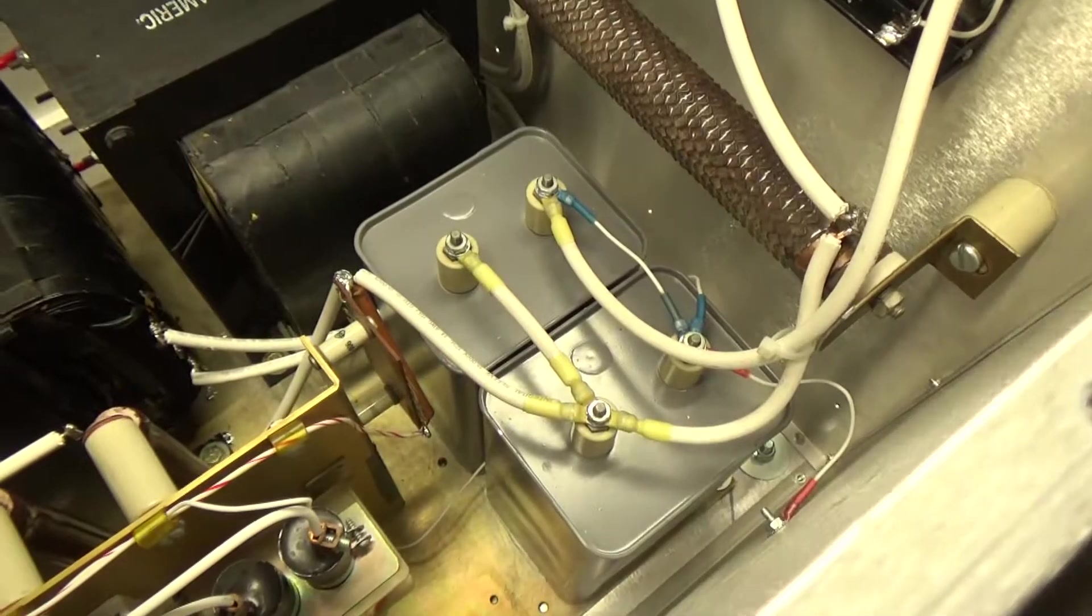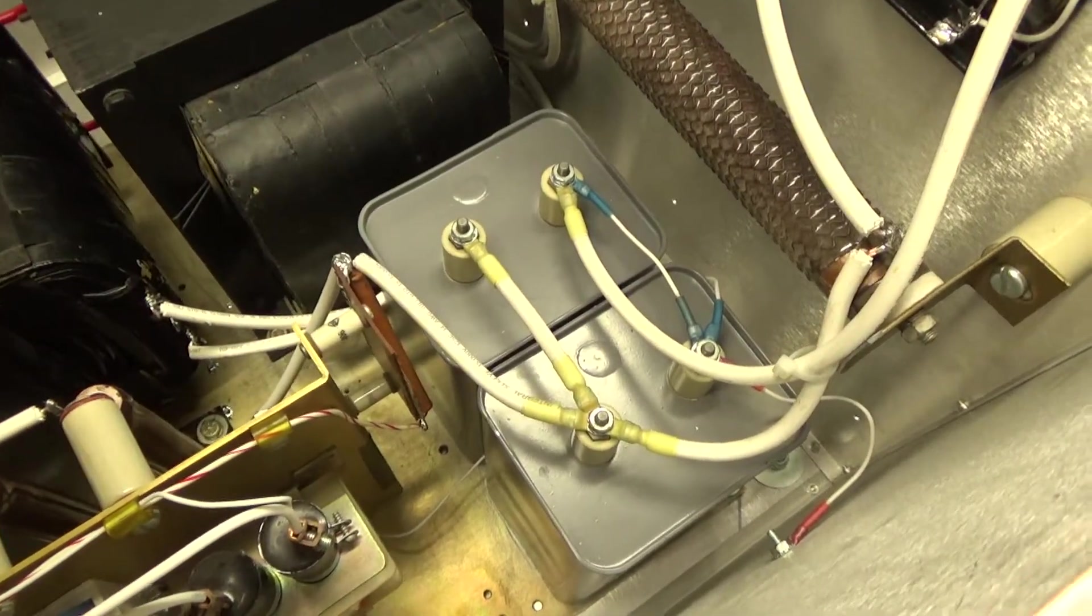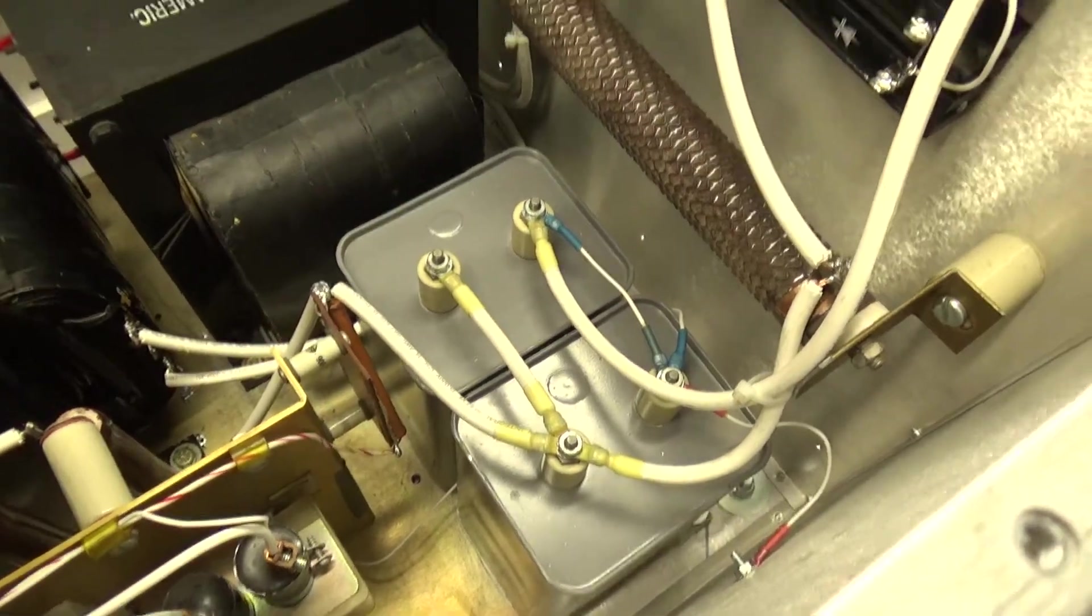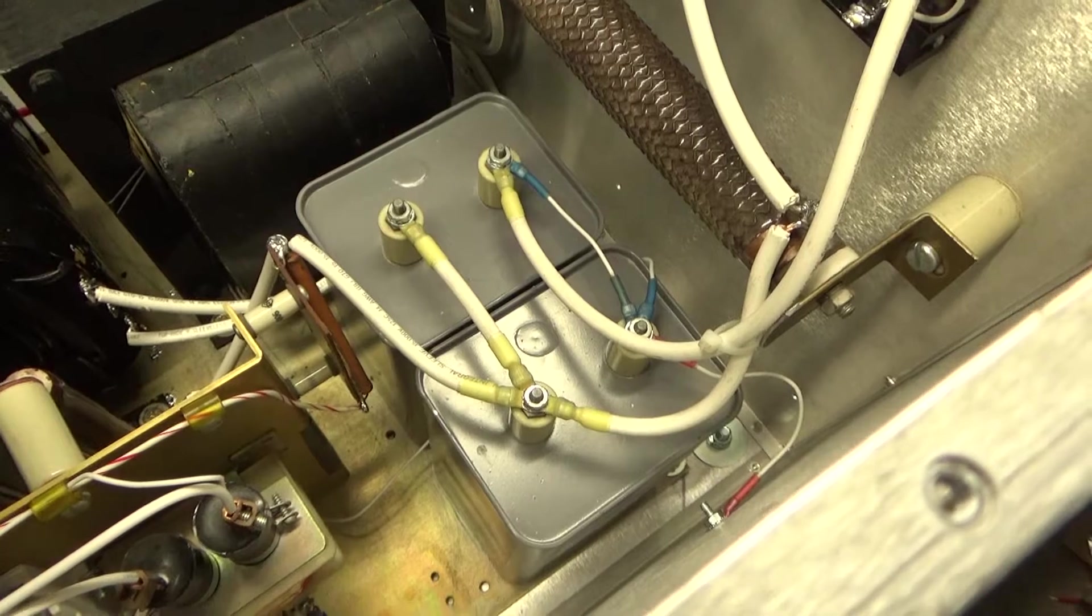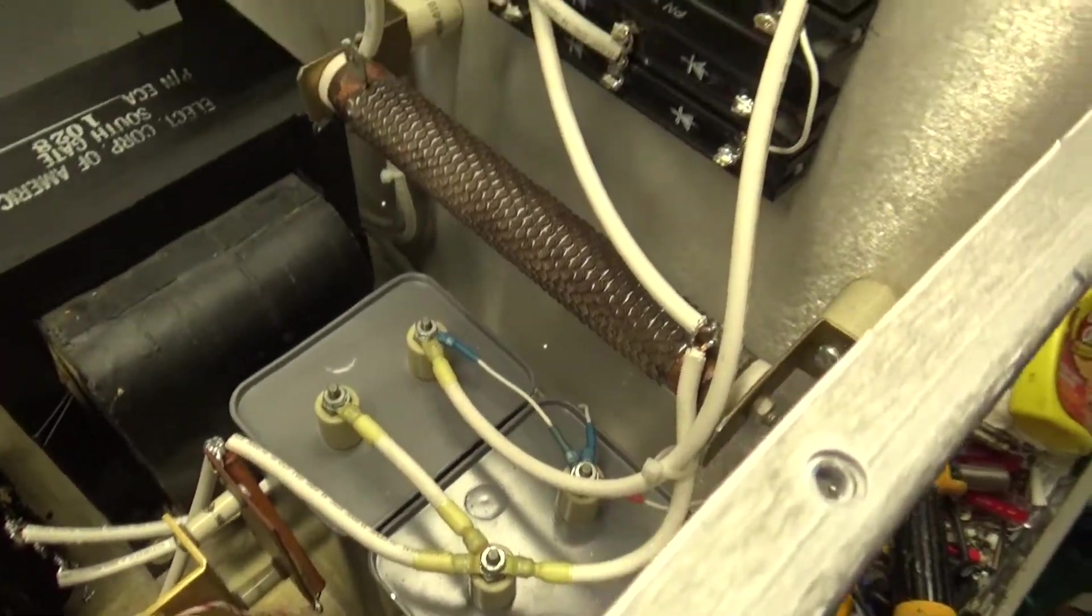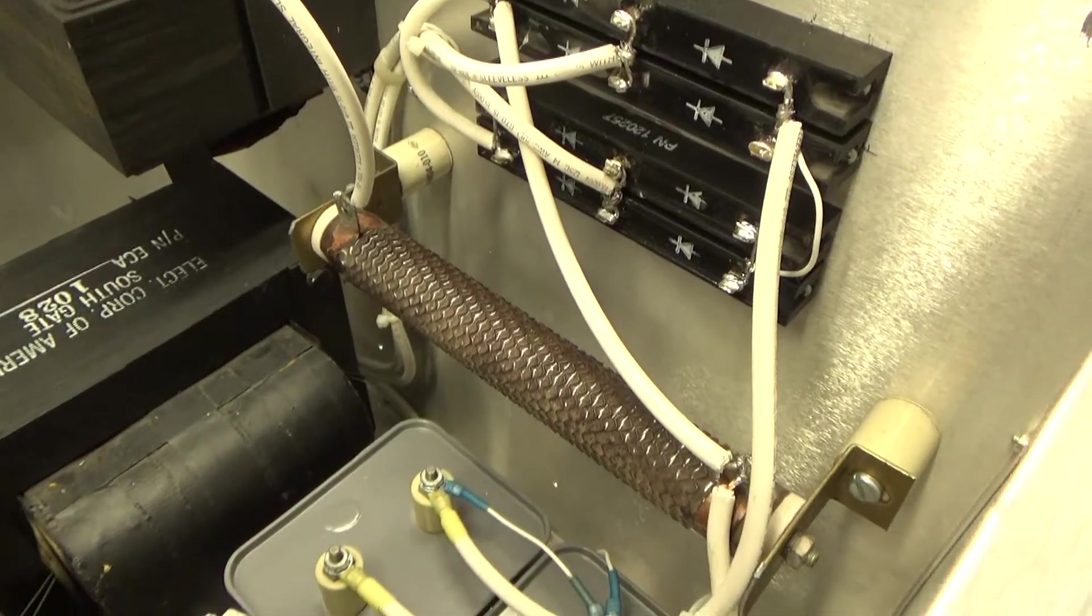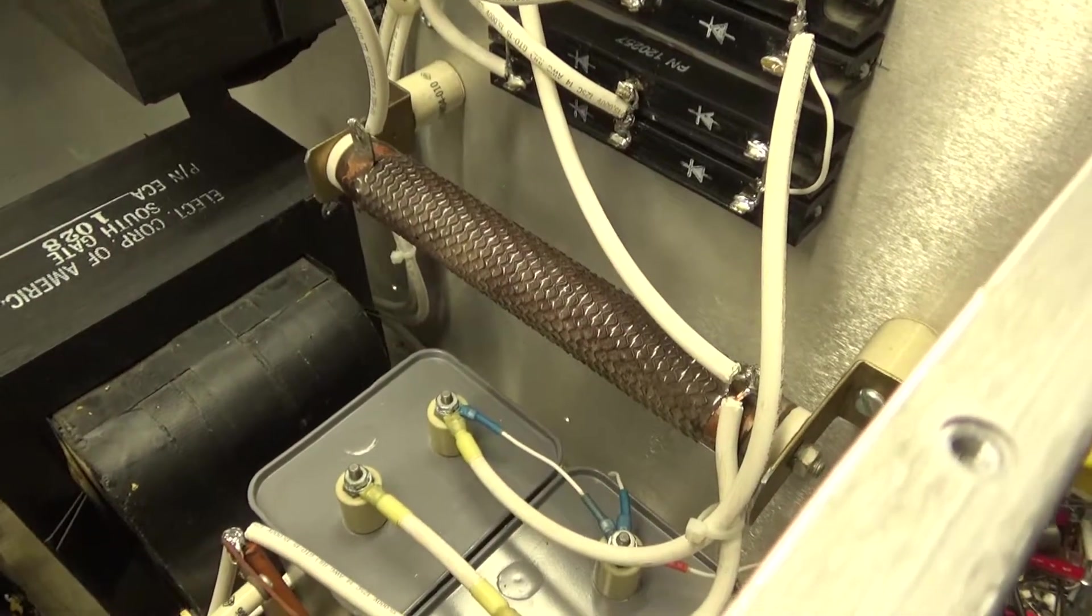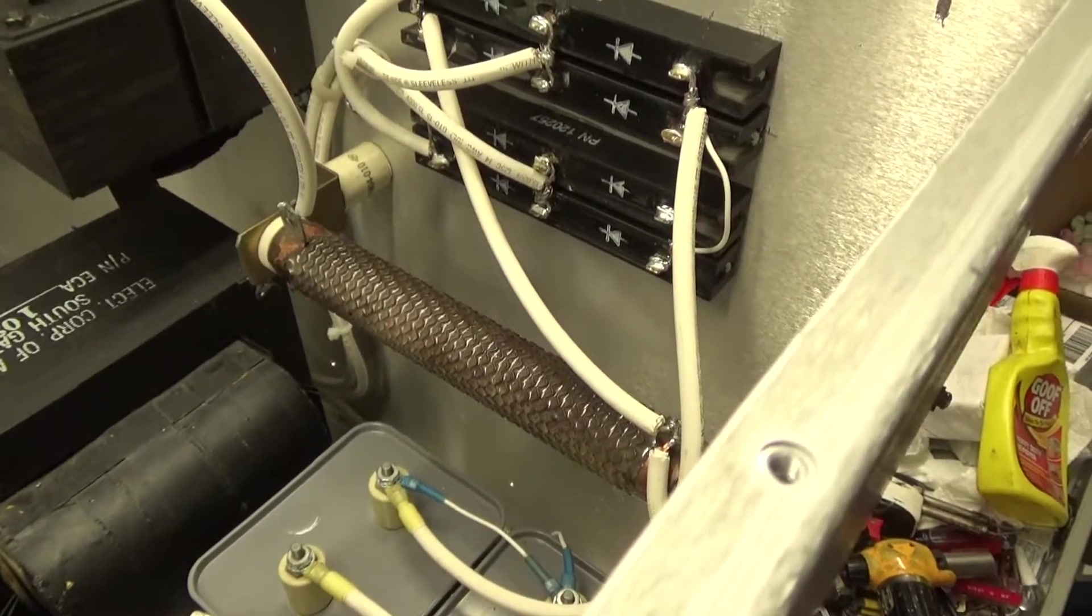You have two 8 microfarad 8 kilovolt DC capacitors wired in parallel, so now I have a total of 16 microfarads at 8 kV DC. You have the glitch resistor right there. I have over a hundred of these things. They're just awesome. They're Ohmite wire type. I have yet to have one fail, so I use them all over the place.